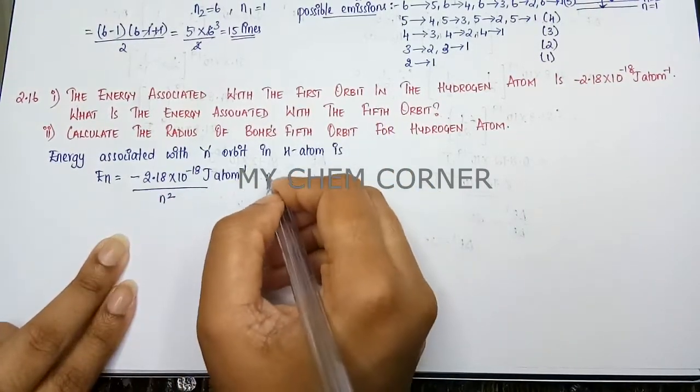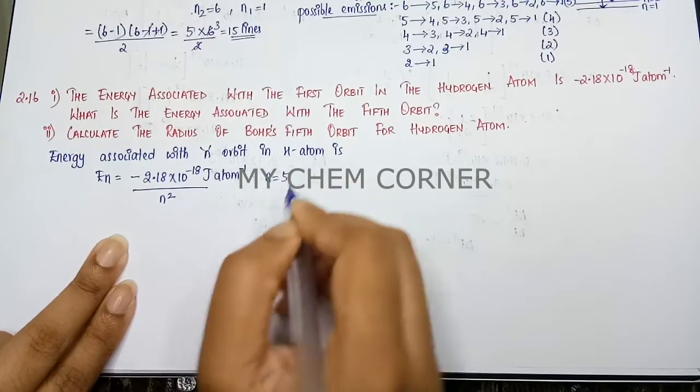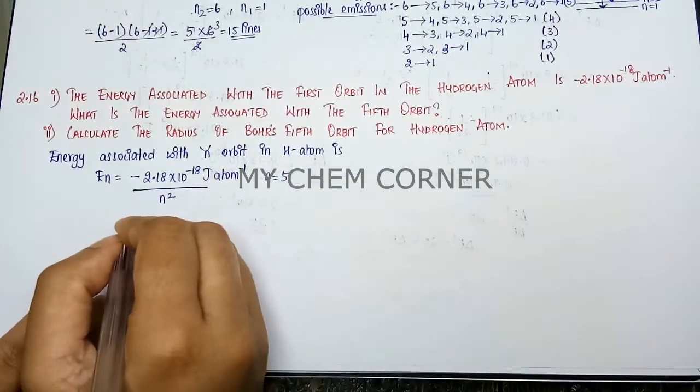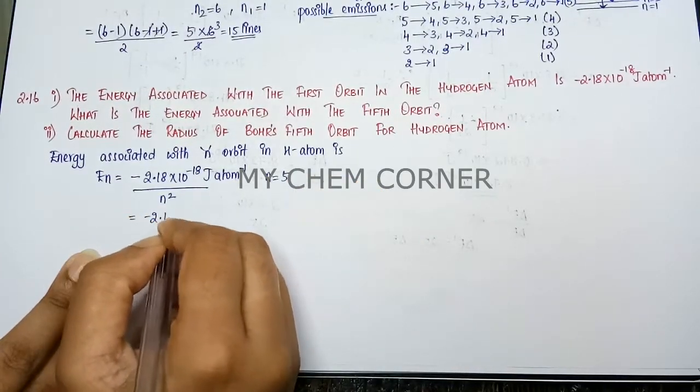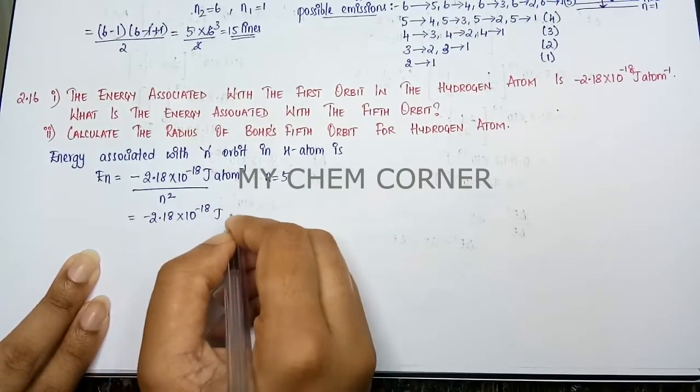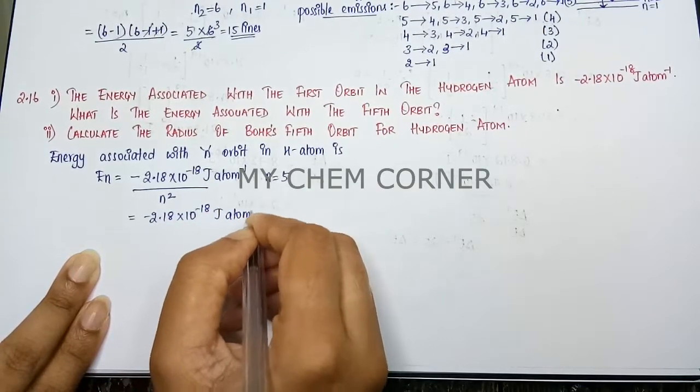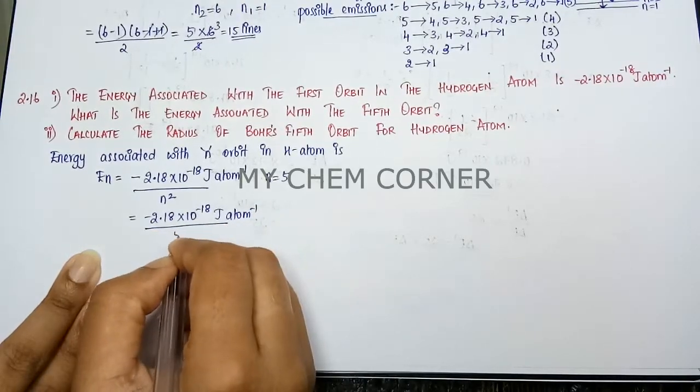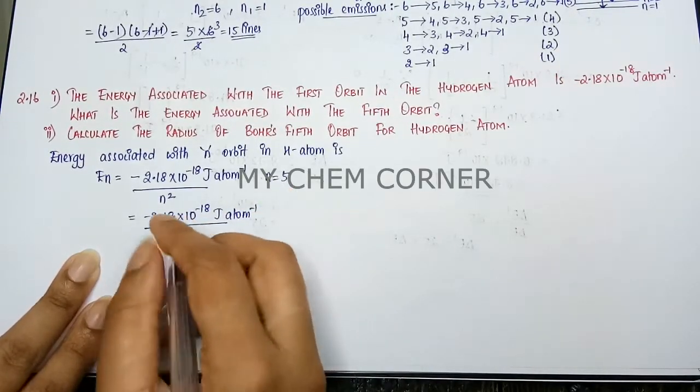And now it clearly says that it is a fifth orbit, therefore n is equal to 5. So now we will rewrite this as 2.18 times 10 to the power minus 18 joule per atom by 5 square. Because n is equal to 5, so 5 square.